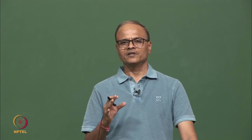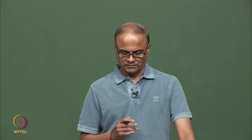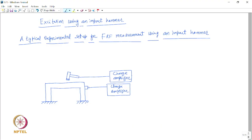The charge amplifier converts the charge signal into a voltage signal. This voltage signal from the charge amplifier is then fed to a data acquisition system or an FFT analyzer. If we are using an FFT analyzer, we require at least two channels for measurement, because we want to simultaneously measure the force signal as well as the response. So we require a dual channel measurement.